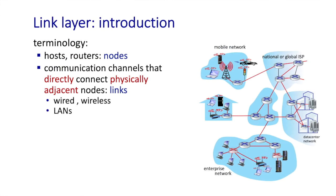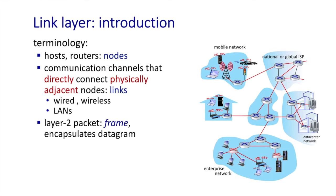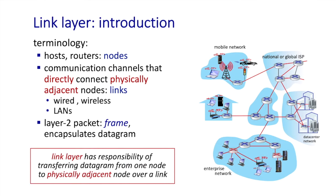The last important definition is that of a frame, which is the layer two packet or protocol data unit for the link layer. A frame will typically encapsulate an IP datagram as its payload in an internet setting. We can summarize by saying that the link layer has the responsibility of transferring a datagram from one node to a physically adjacent node over a link — and pretty much every word in that statement is important.